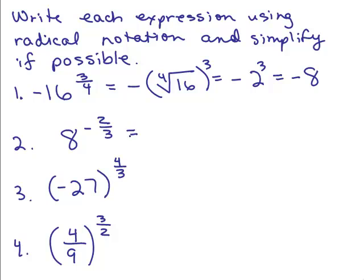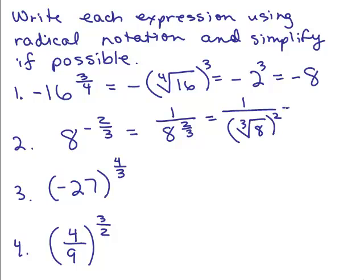Next: 8 to the negative 2/3. When you have a negative exponent, rewrite it as 1 over 8 to the positive 2/3. The root is 3, so write the cube root of 8, then square it. The cube root of 8 is 2, so we have 1 over 2 squared, which is 1/4.